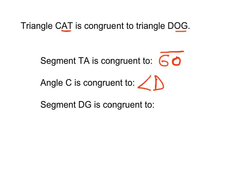And then finally, segment DG. Well, DG is like first, last in the name DOG. So first and last, first and last. So segment CT would be the segment that's congruent to segment DG.